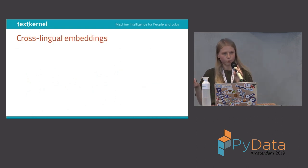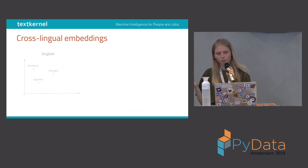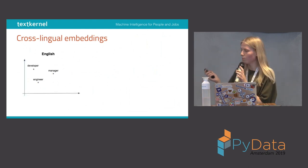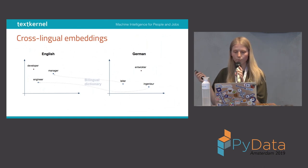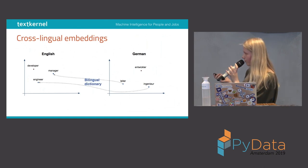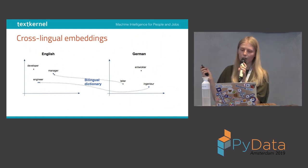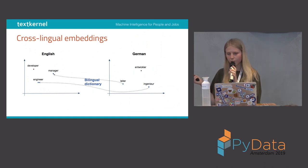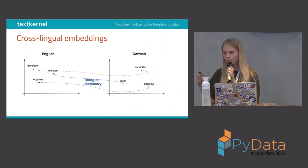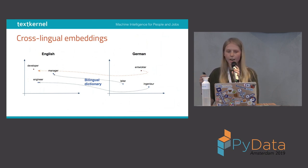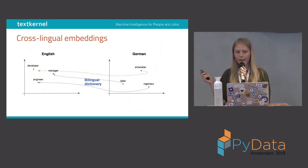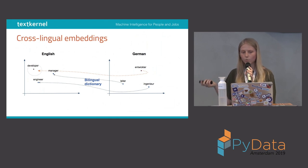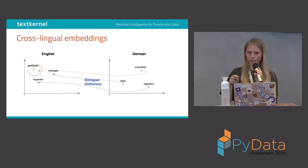Here's a more visual example of how we train cross-lingual embeddings. You have a bilingual dictionary with pairs like manager/manager and engineer/engineer, and you learn the transformation matrix from these pairs. Then you have the German word Entwickler, which was not in the bilingual dictionary, and you map it to the English space using the learned transformation matrix, hoping it lands close to developer in English.